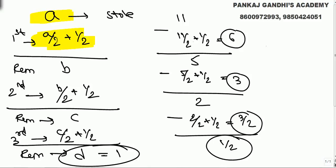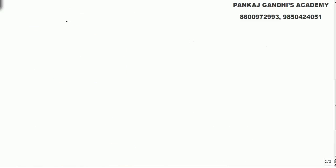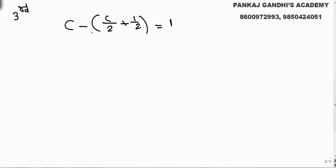Before meeting the first guard, he had a. Half of what he's having, plus half an extra orange — remaining is b. To the second guard he gives b/2 plus half, remaining c. To the third guard, remaining at the end is 1. Let's go in the reverse manner to solve the question. Before meeting the third guard he had c.